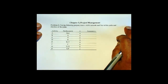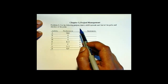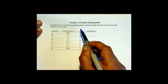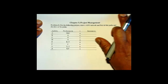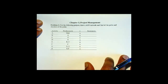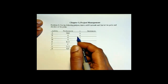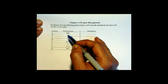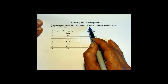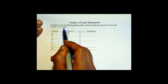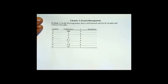This is the first worked out problem. I have a class problems Word document in Blackboard — go ahead and download that, print the file, and you'll see these problems in that file. You can work the problems along with me. So the first problem is: for the following project, draw an AON network and find all the paths and duration of the paths. So we start with drawing the network.